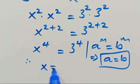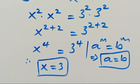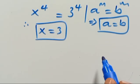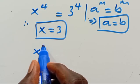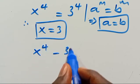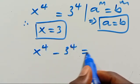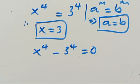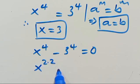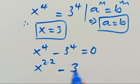This implies X equals 3. But X equals 3 is not the only solution for the problem given to us. Let's find the other solutions. We can write X to the power of 4 minus 3 to the power of 4 equal to zero. Let's re-express this: 4 as 2 times 2 — so X to the power of 2 times 2 minus 3 to the power of 2 times 2 equals 0.